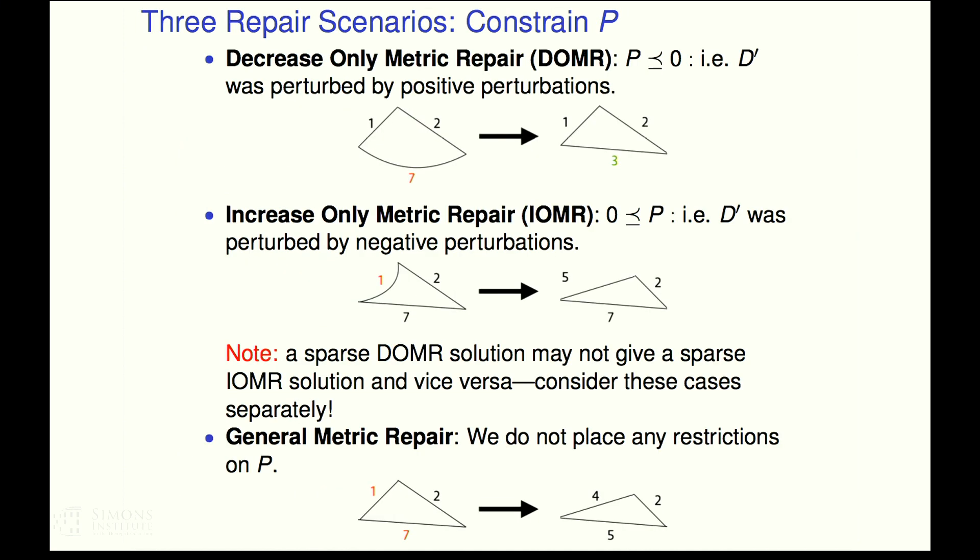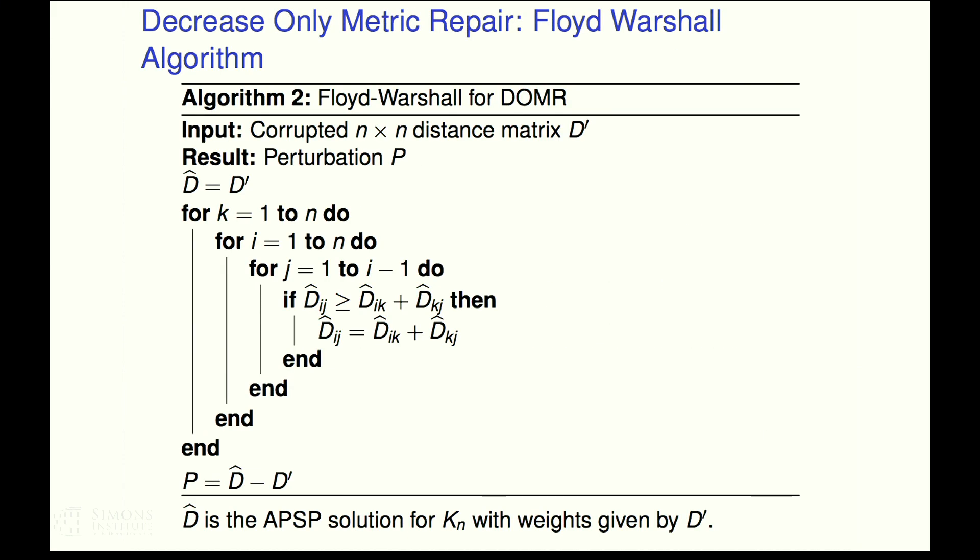Now I claim that there's a really beautiful simple algorithm for decrease only metric repair. And those of you who have to teach undergraduate algorithms, if you squint at this, you'll say, I've taught this. I know this. This is simply the Floyd-Warshall algorithm for all pairs shortest path. This fixes the distances that are incorrect. And it fixes them only when you're only allowed to shrink distances. And so in particular, you can go through this and check. Sure enough, what is returned, D hat, the correction, is the all pair shortest path solution for the complete graph on N vertices with the weights given by the original distances.